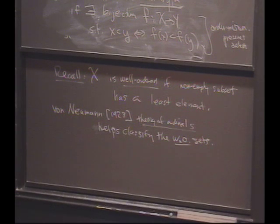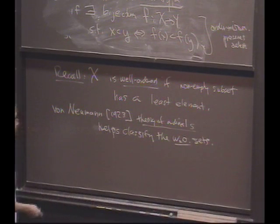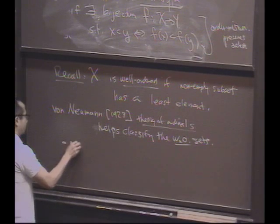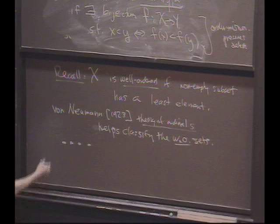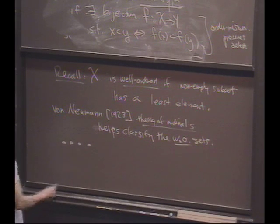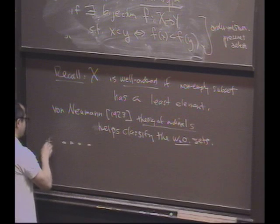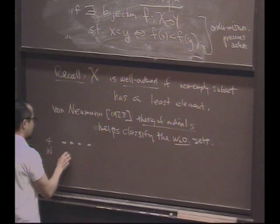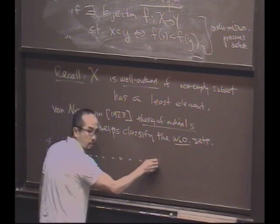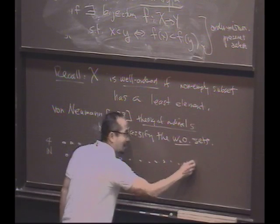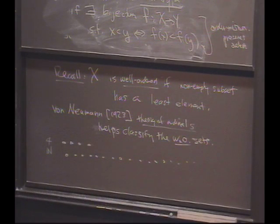Before I do the construction, let me just give you a sense of what it's good for. Here's a set — I can think of four things. I can think of it as being well-ordered: everything to the left is smaller, everything to the right is bigger, and every subset has a least element. What about the natural numbers? Well, that's a set that kind of looks like this — dot dot dot — and it's well-ordered.